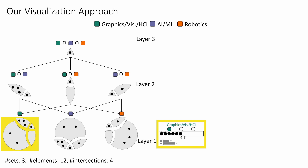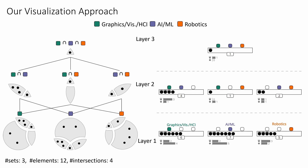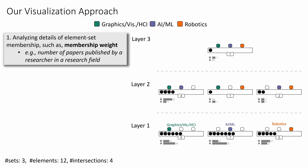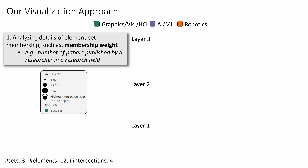Two horizontal bars below the rectangle encode the quantity of elements with and without hat markers. To address the first challenge of analyzing membership weight, since we represent each individual element separately, it becomes easier to encode membership weights. We encode the number of papers published by a researcher through the size of the corresponding circle, giving an updated visualization with different circle sizes. For example, the circle sizes inside the Robotics node in layer 1 vary a lot.